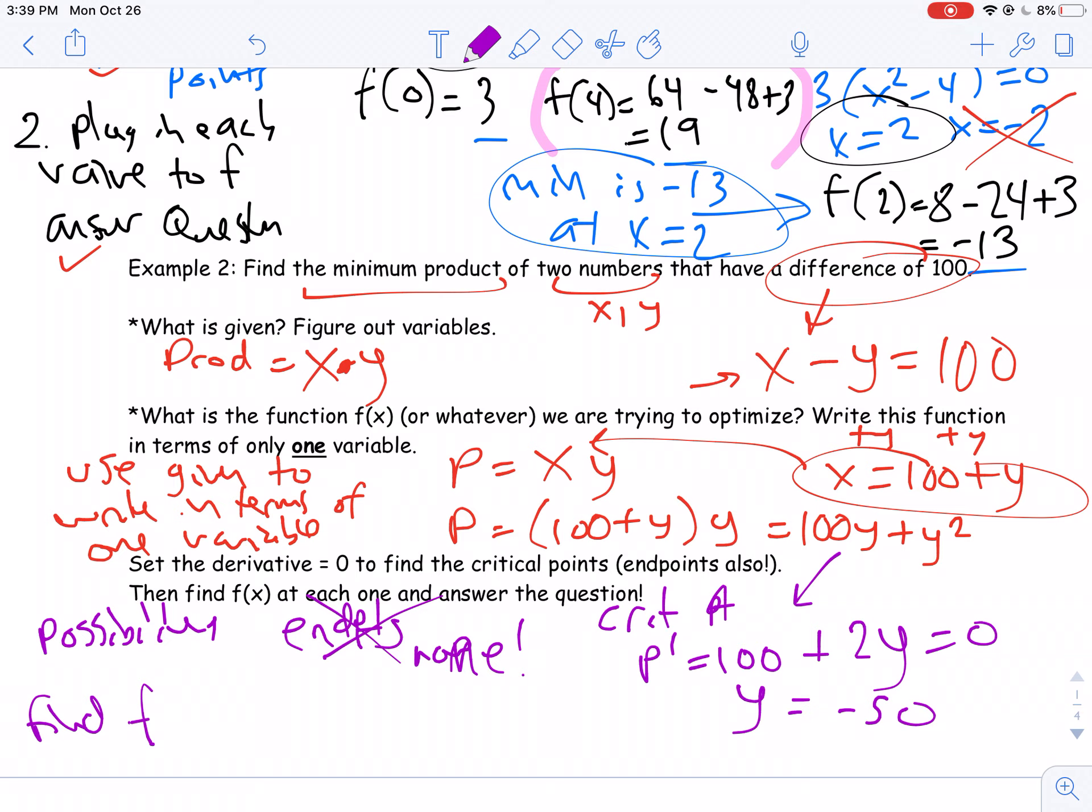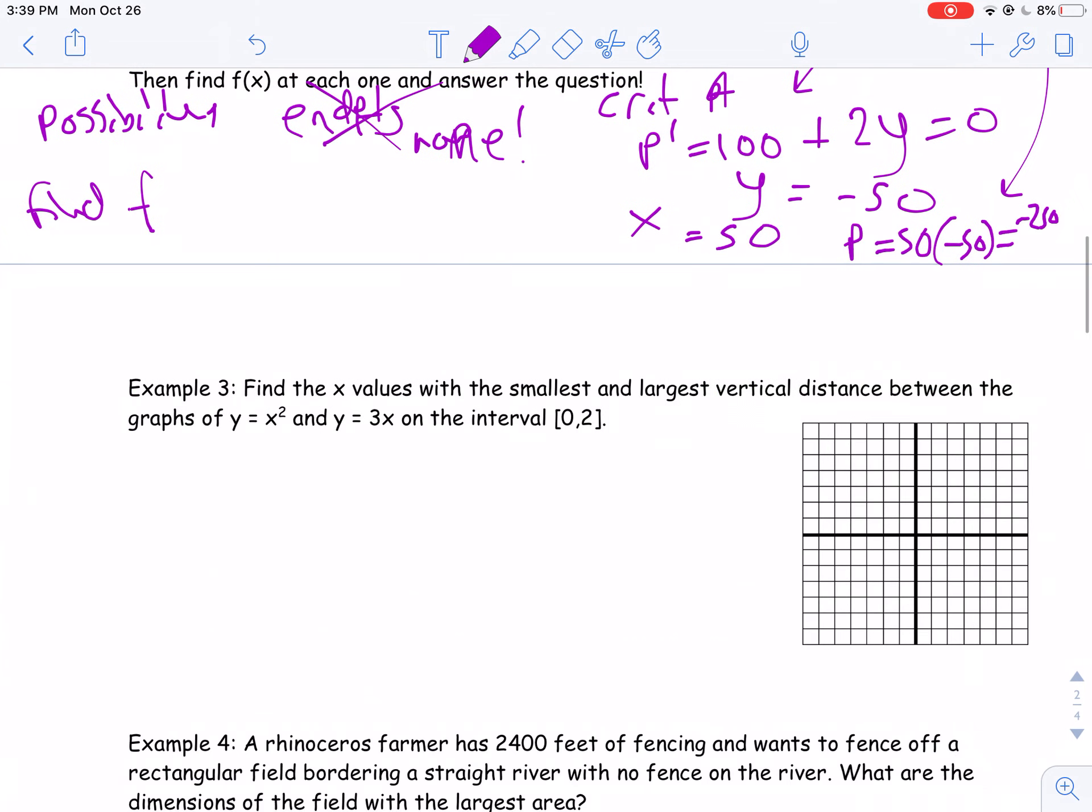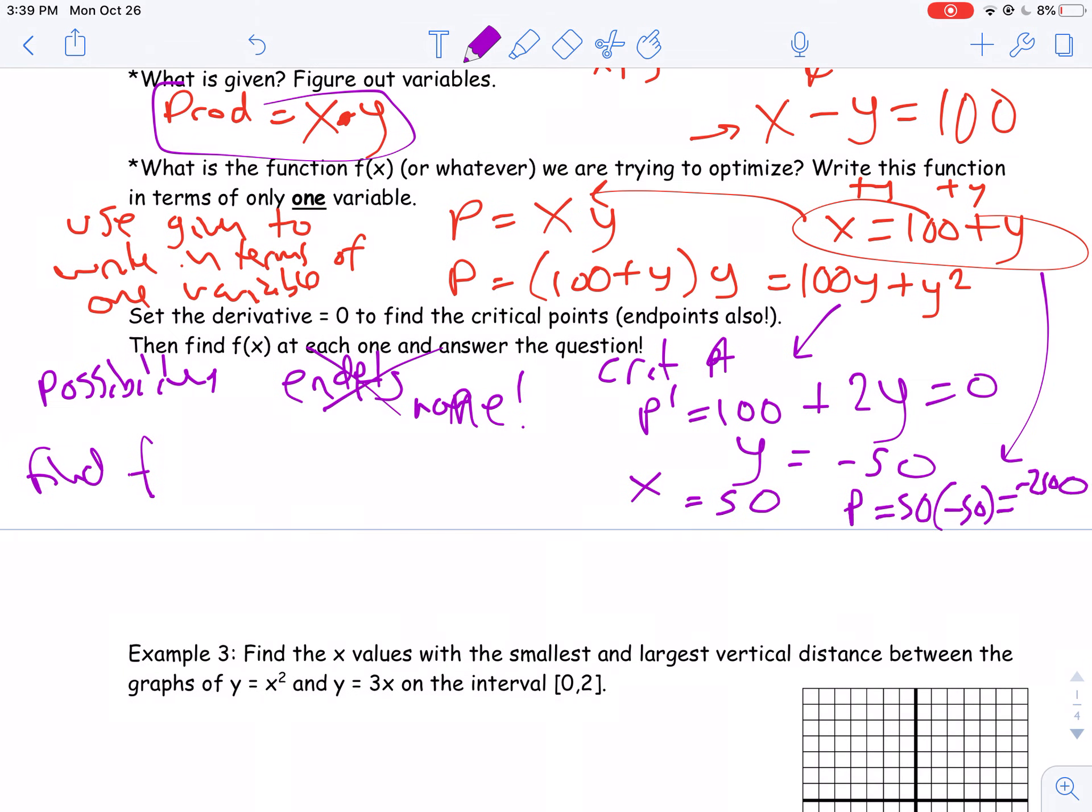Now let's answer the question. The question asks for what is the product. So the other number x, x is 100 plus y. So x is 100 minus 50. X is positive 50. So my product is 50 times negative 50, also known as negative 2,500.